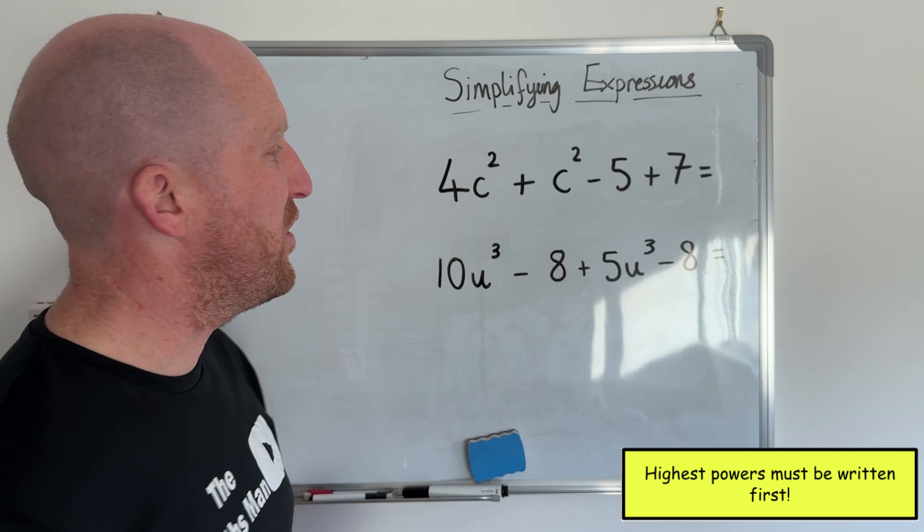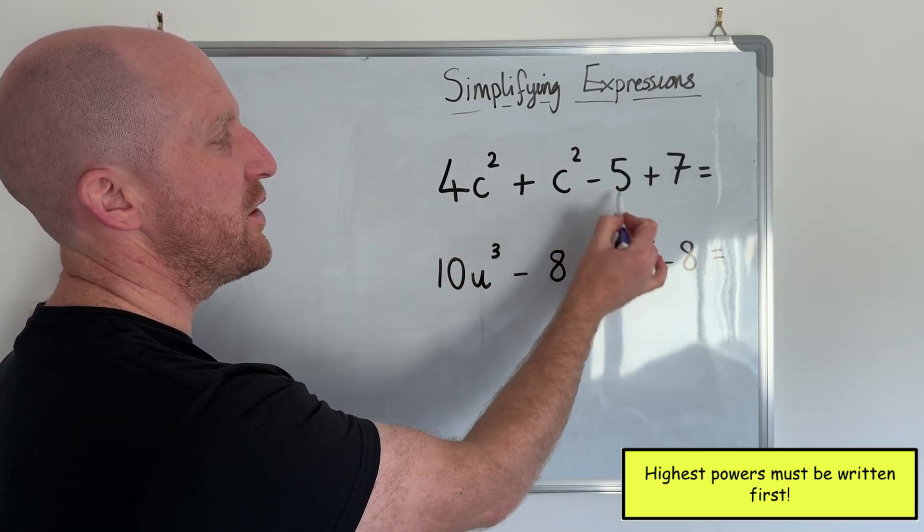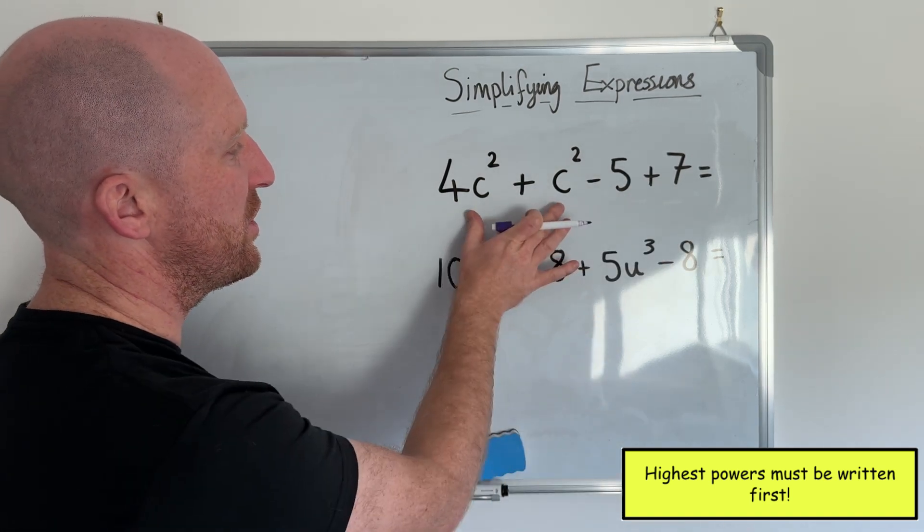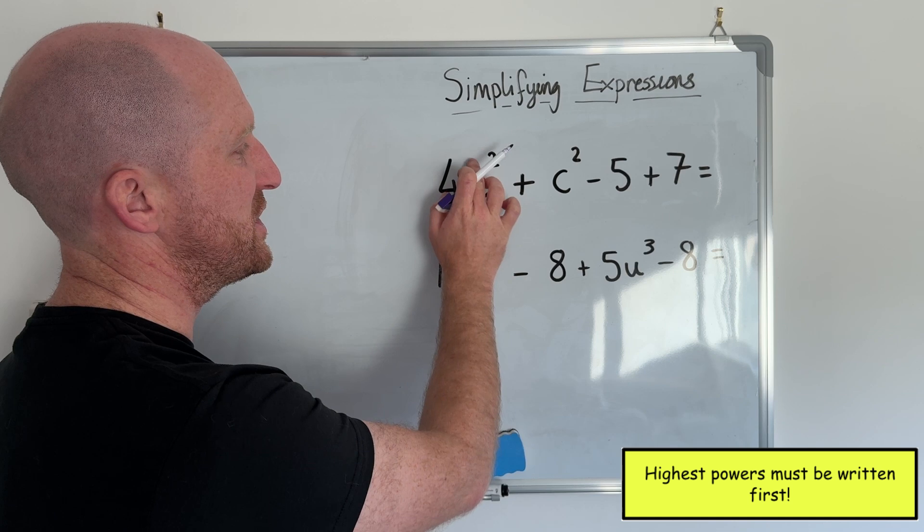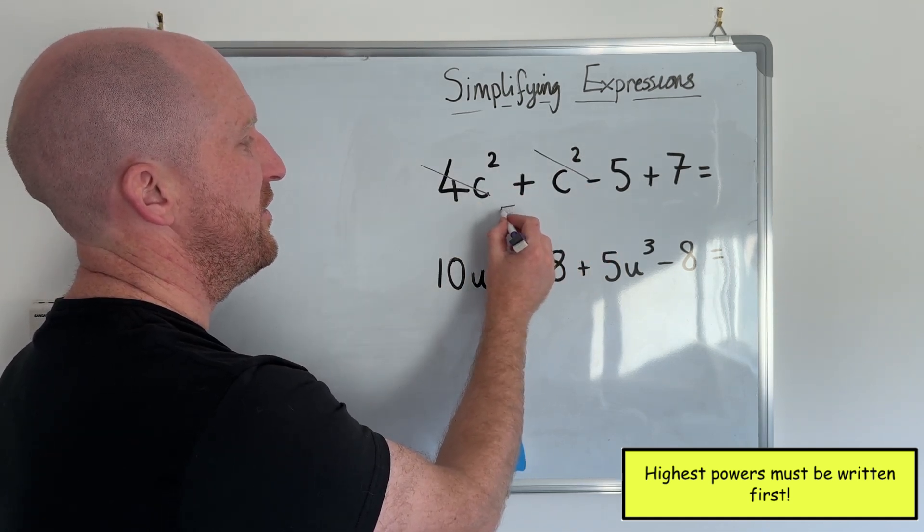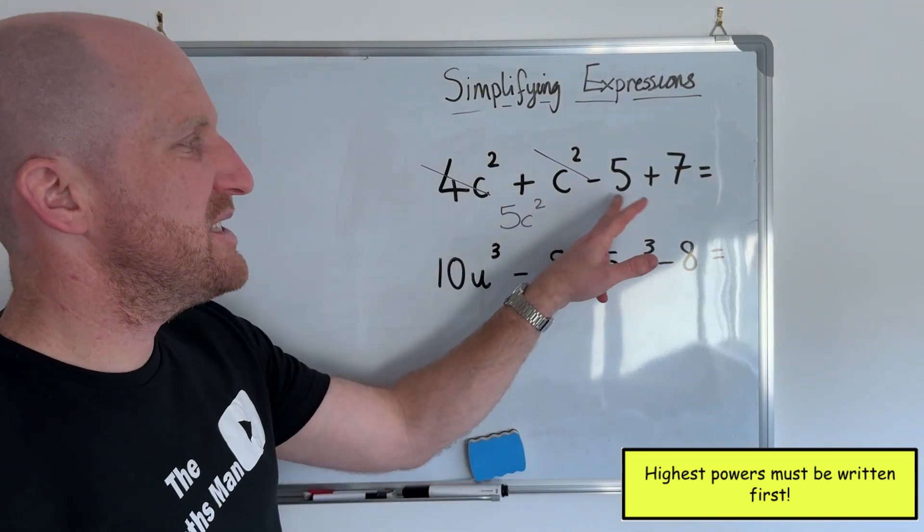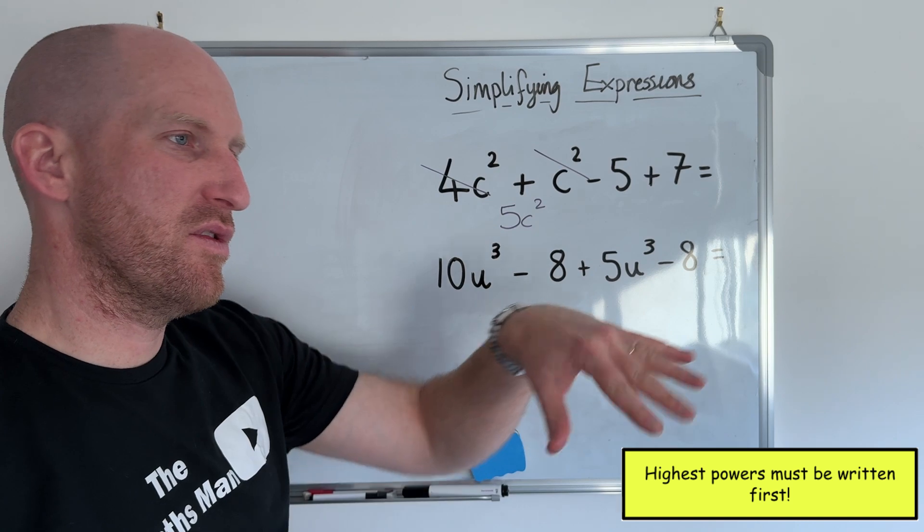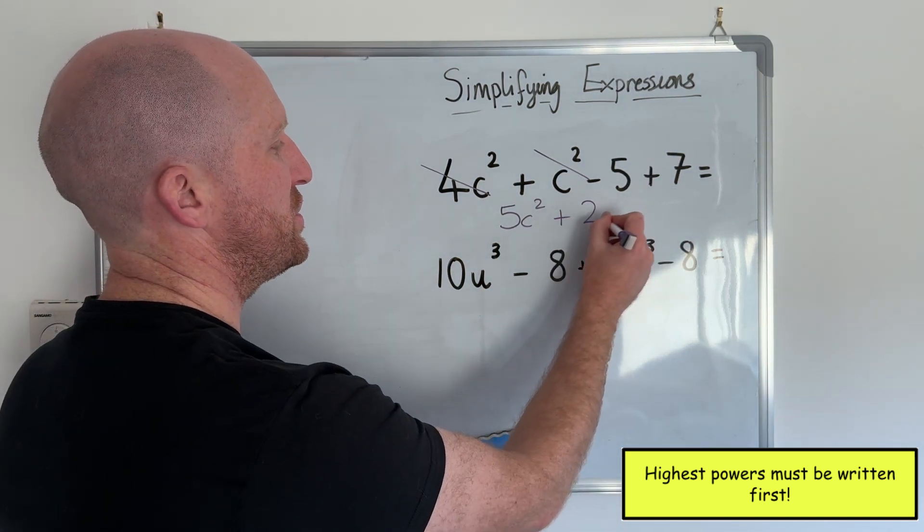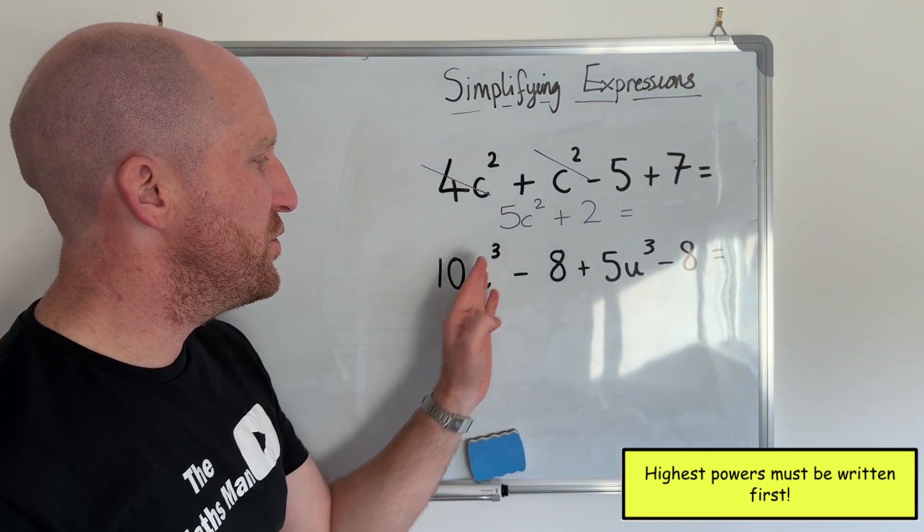These are quite straightforward. So we have 4c squared, add c squared, take away 5 plus 7. So I'm going to deal with the regular numbers last and I'm going to go with the c. So I've got 4c squared, add c squared. That's easy. That just makes 5c squared. And then I've got negative 5, add 7. So if I've got negative 5, add 7, that's going to give me plus 2.